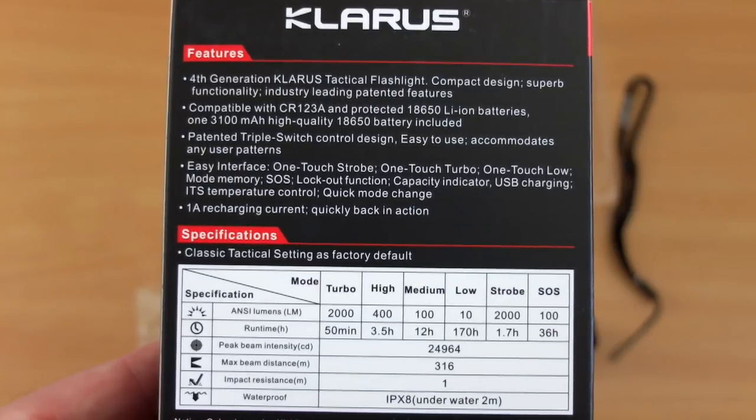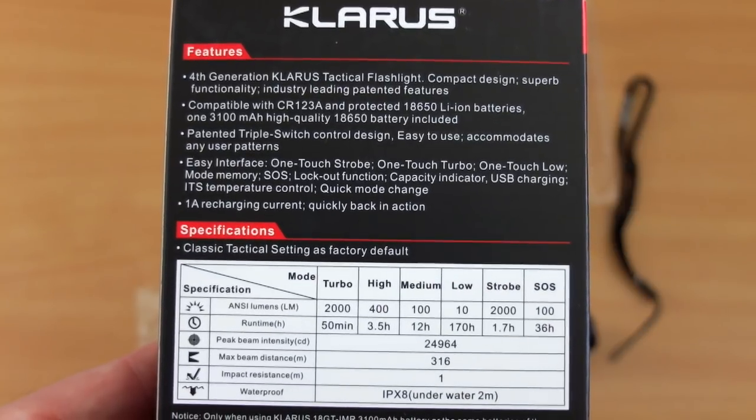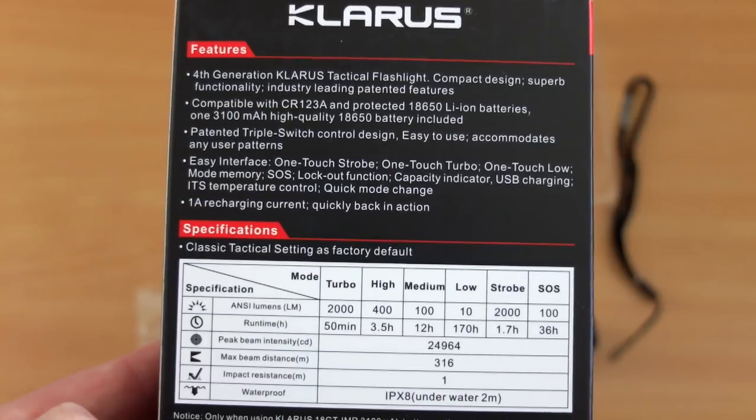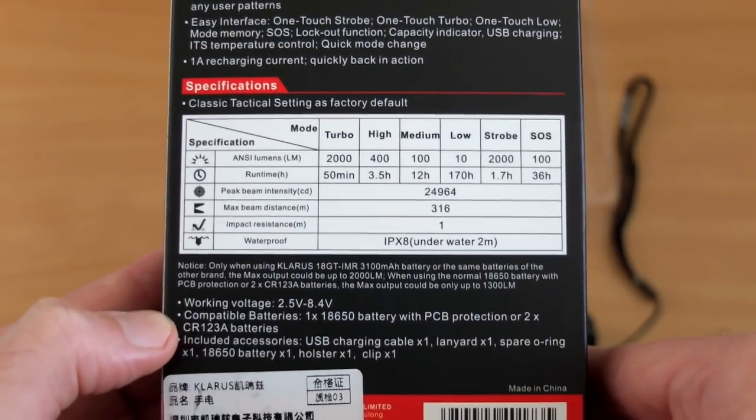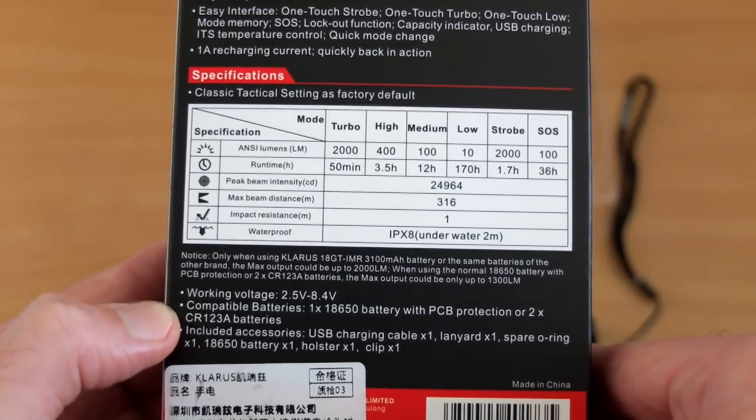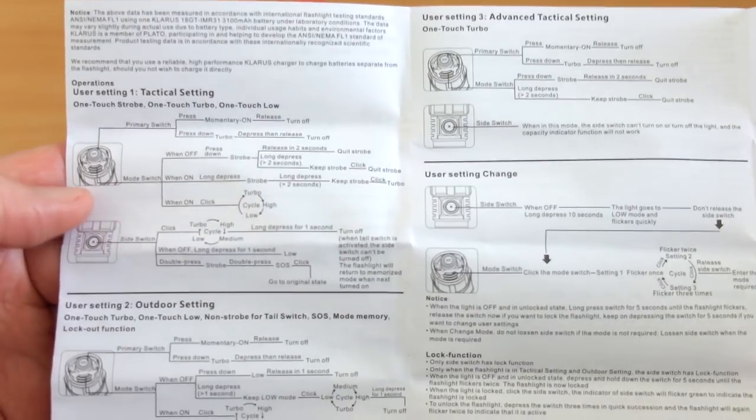On the back this is quite useful information - gives you the power outputs and run times approximately, and some more overviews of the features which we'll get into shortly. You can use CR123A cells on this as well, but you get an 18650 supplied.